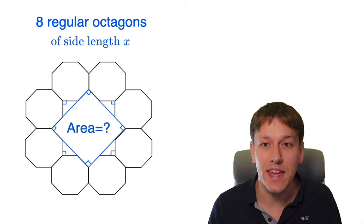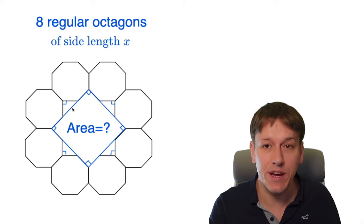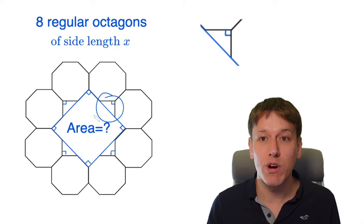That means that we can split the area we're looking for into this square here, and four right angle triangles. If I can work out those areas, we can add them together to get the total area. So let's focus on these small right angle triangles.